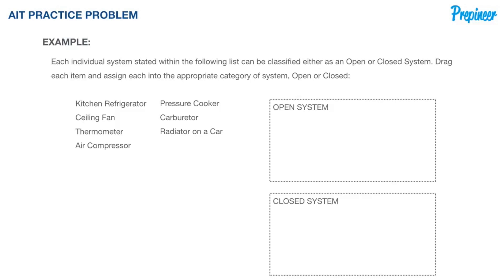Each individual system stated within the following list can be classified either as an open or a closed system. Drag each item and assign it into the appropriate category, either open or closed. We have a list of seven systems defined for us, and two areas where we will be categorizing these systems. This is referred to as an alternative item type, or AIT problem, giving us a list of seven different systems.